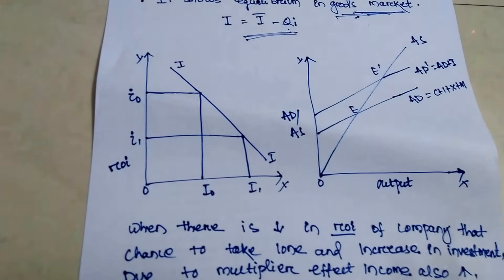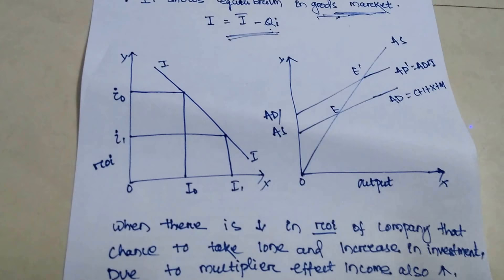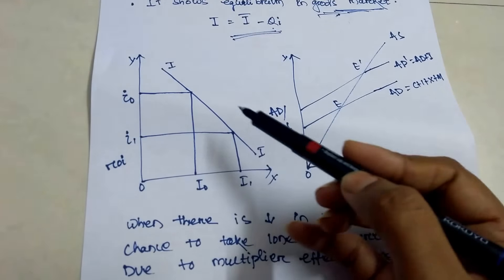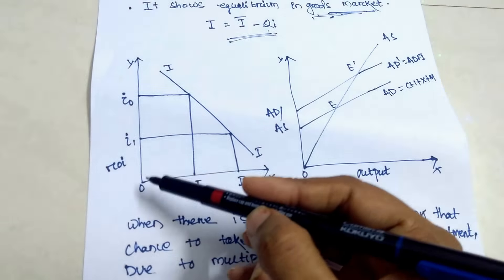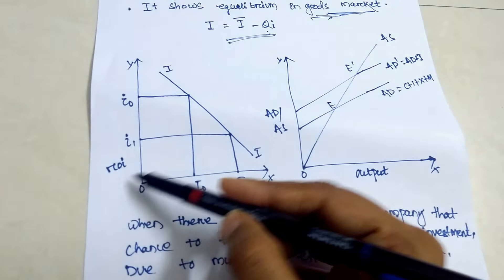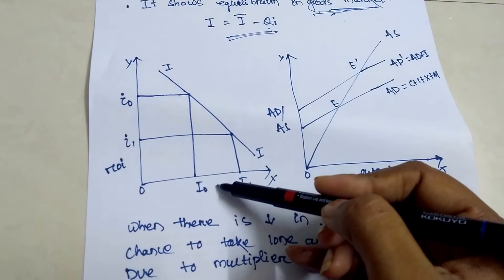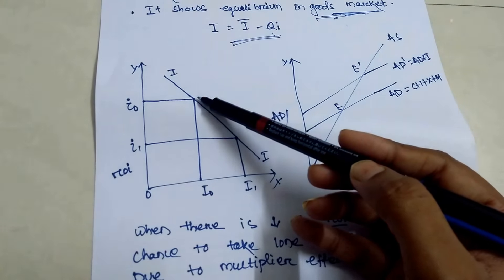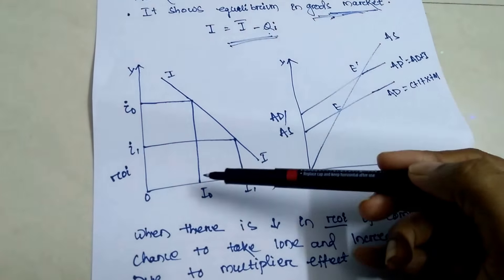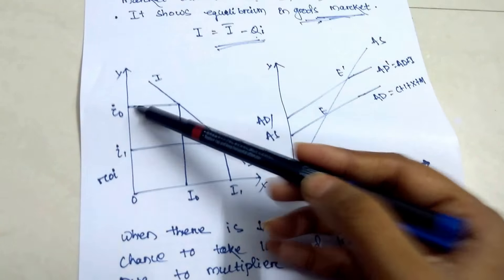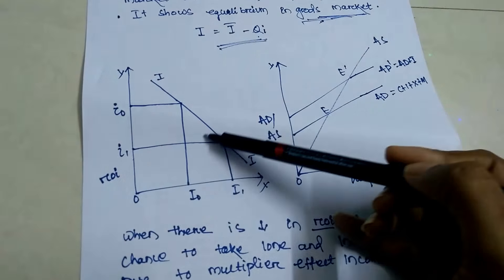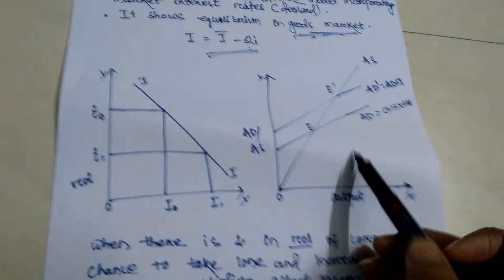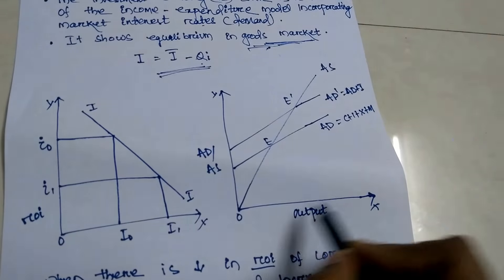In the first diagram, we have to see the IS curve in a proper and clear manner. There is a relationship between rate of interest and output. When the rate of interest is high, output is less. When the rate of interest decreases, output is more.